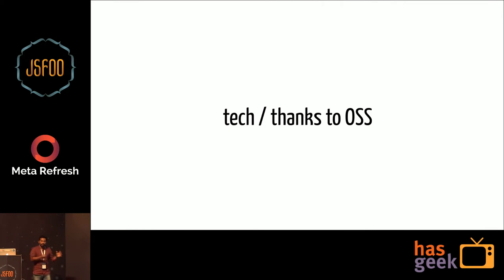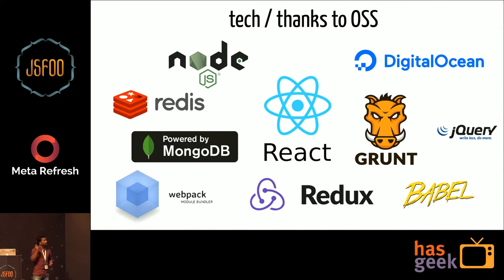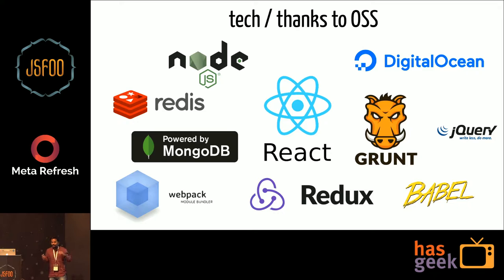Before I go to the core of the talk, I'd like to take a brief moment to thank all those people who work behind the scenes writing free, open source software that CheapAss currently uses — Node.js, Redis, MongoDB, Express, React, Redux, Grunt, jQuery, and a bunch of other technologies powering the CheapAss servers.